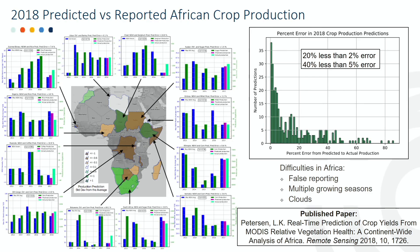This is an online interactive map of future crop predictions, and surrounding it are example plots of 2018 predicted and actual production values. The histogram shows the errors for all 2018 crop predictions: 20% had less than 2% error and 40% had less than 5% error.